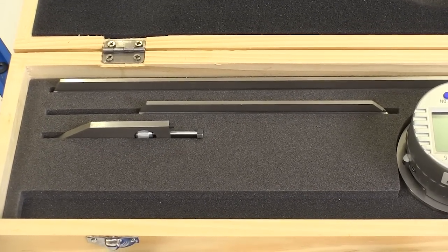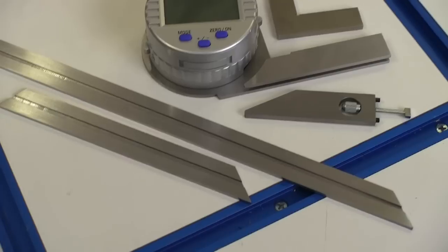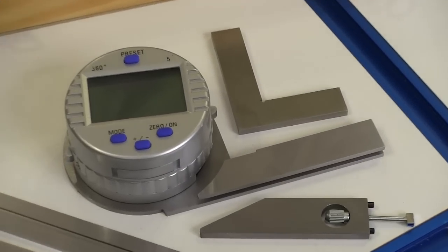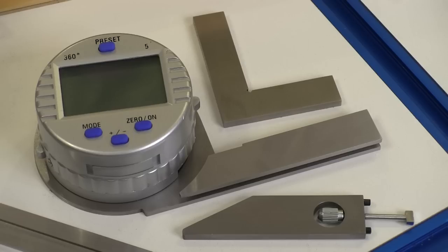You get blades that are five and seven eighths inches long and eleven and seven eighths inches long. You also get the two and three-quarter inch long acute angle blade, and the machine square helps you calibrate the unit should that ever become necessary.